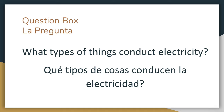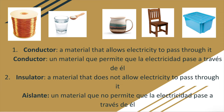In our question box in our scientific journal, let's write this question: What types of things conduct electricity? Have you ever noticed that the end of your charger for your computer is metal and goes into the outlet, but the rest of the charger is wrapped in rubber so you can hold it? A conductor is a material that allows electricity to pass through it — examples are metal or salt and water. An insulator is a material that does not allow electricity to pass through it — examples might be wood, plastic, or rubber. Can you think of other types of conductors or insulators?